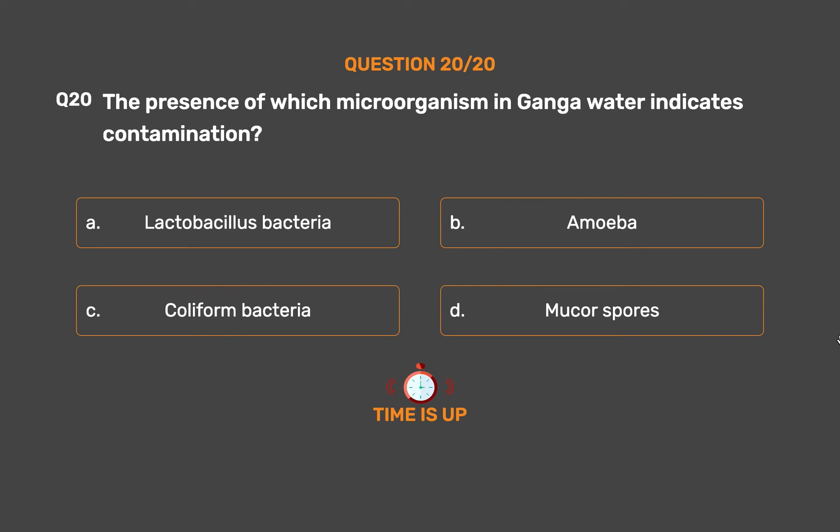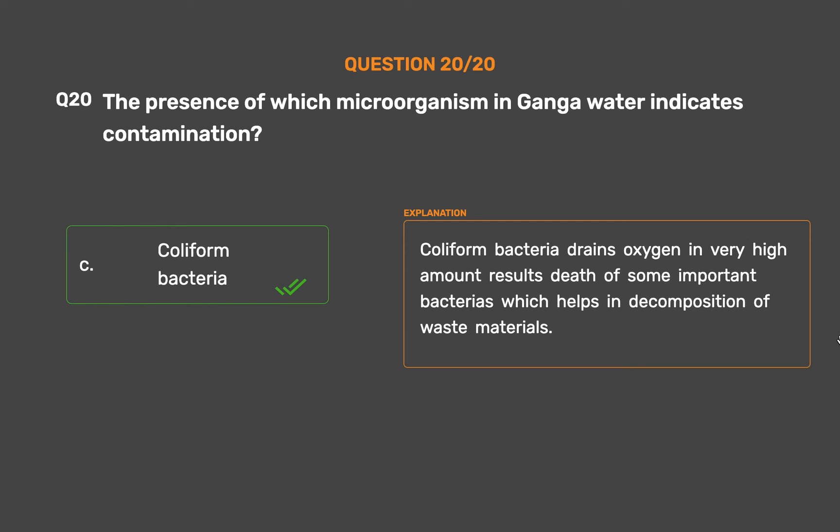The correct answer is Option C: Coliform bacteria. Coliform bacteria drain oxygen in very high amounts, resulting in the death of some important bacteria which help in decomposition of waste materials.